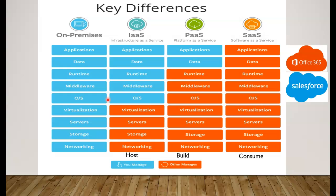With PaaS you get a much quicker model to deliver your products and services instead of spending time on configuration. For example, with SQL database: in PaaS, SQL is readily available and you simply use the SQL service; but in IaaS you have to spin up a VM, install and configure it, install SQL Server, configure the database, and then your application comes into the picture. You spend a lot of time and resources, so PaaS is a much quicker model. The ideal use case for PaaS is really two-fold.